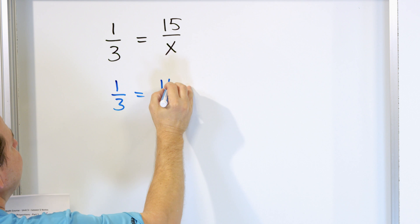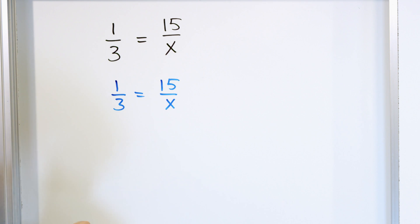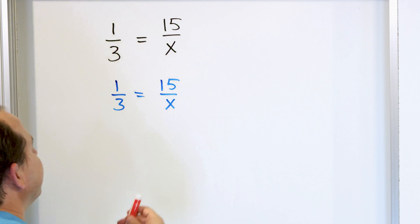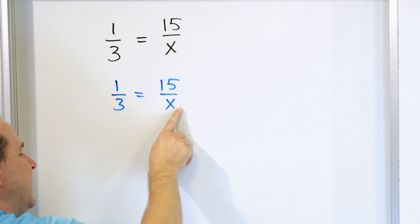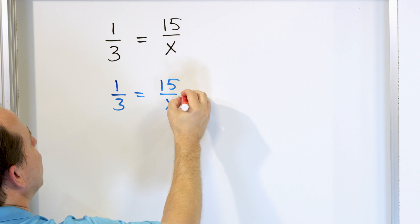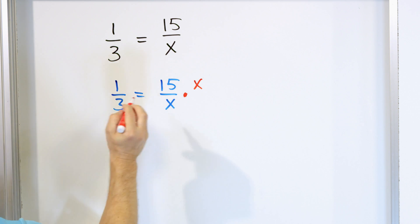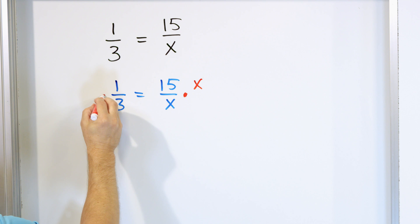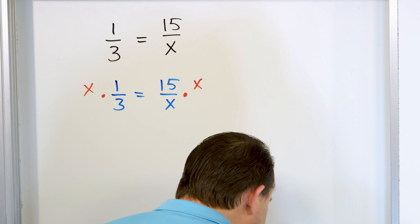The letter x is just a placeholder for a number and it's on the bottom of the fraction. So the first thing we have to do is move it to the top. Let's rewrite what we have: 15 over x. We need to get this x up to the top. This is dividing by x — it's 15 dividing by x. We always do the opposite, so to bring it upstairs, we're going to multiply by x. And if we do it to this side, we have to do the same thing to the other side.